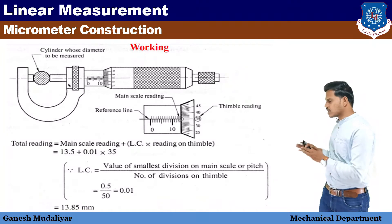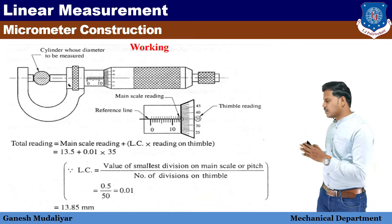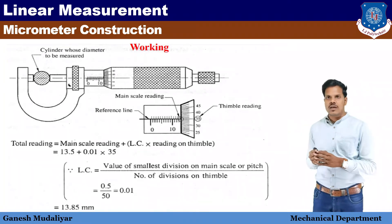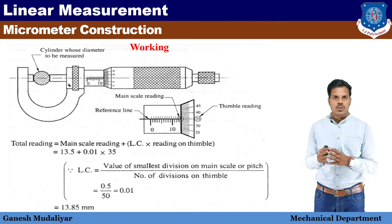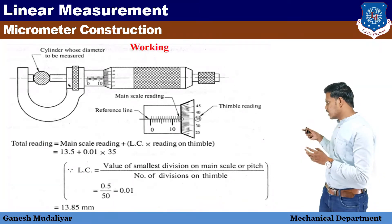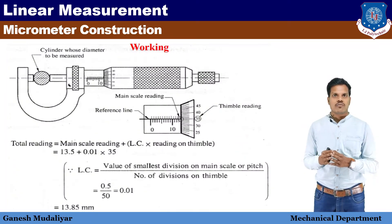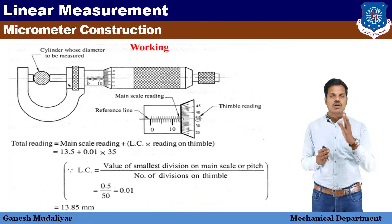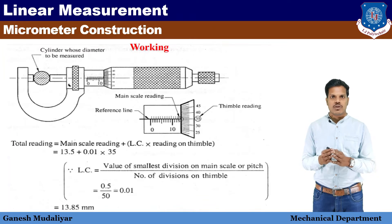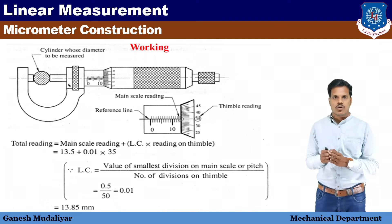Next, we can see how we take a reading. For a specific object, like a wire or a cylinder, we have an anvil and spindle. We will slowly rotate the thimble until it is fixed around the cylinder. Then we will apply the ratchet screw with uniform pressure so that it will be attached uniformly. Then we will take the reading, which is shown in the second diagram.